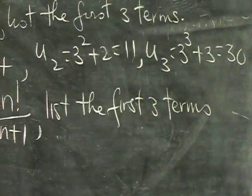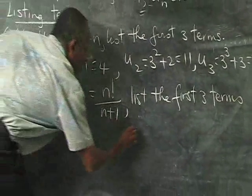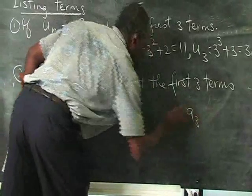Which means in this case, the sequence is now AN, not UN as we did before. So we want A1, we want A2, and we want A3.